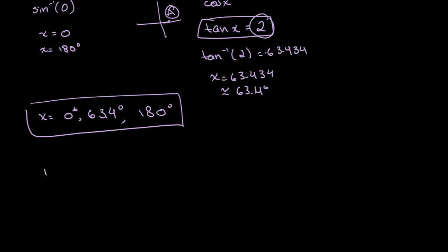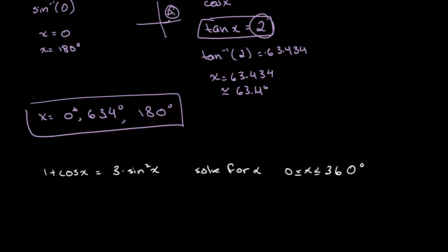Now let's say that 1 plus cosine of x is equal to 3 times sine squared of x, and we have to solve for x when 0 degrees is less than or equal to x which is less than or equal to 360 degrees. What we have to do is simplify this using the identities found above. The easiest way is to get everything in terms of cosine of x and then solve a quadratic equation.